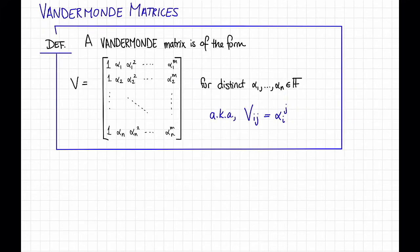A useful concept when talking about polynomials over finite fields and polynomial evaluation and polynomial interpolation is Vandermonde matrices. So here's a definition. A Vandermonde matrix is a matrix of this form. That is, we're going to pick n distinct values alpha_1 up through alpha_n in some field F, and then we're going to let V be the matrix so that the (i,j)-th entry of V is alpha_i^j.